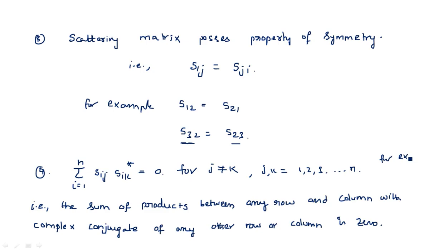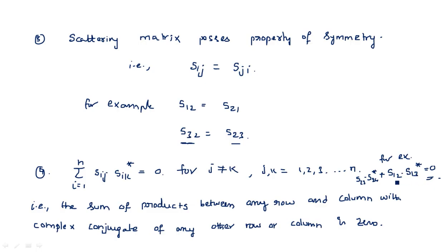For example, S12 multiplied by S13* equals zero. You can extend this: S23 multiplied by S24* also sums to zero, and so on. The sum of products between any row or column with the complex conjugate of any other row or column is zero. These are the four important properties of the S matrix, helpful when calculating scattering matrix parameters for T junctions and various microwave components. Thank you.